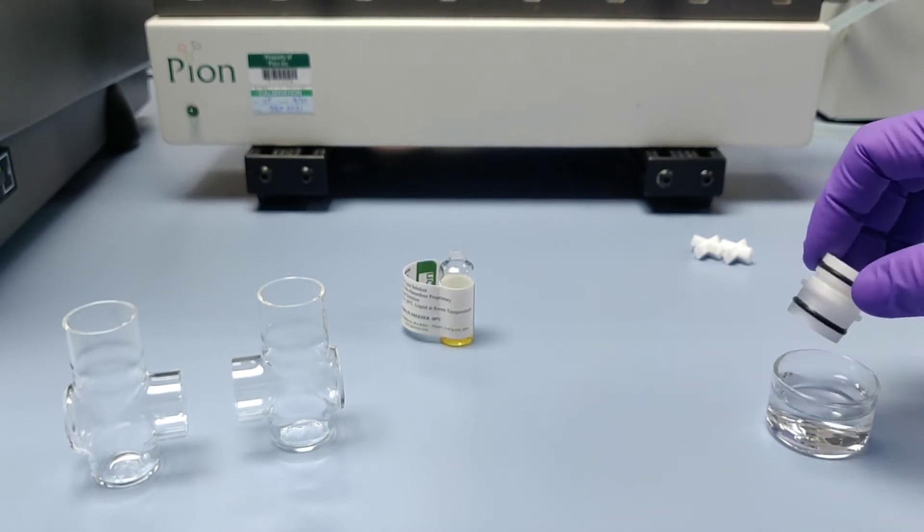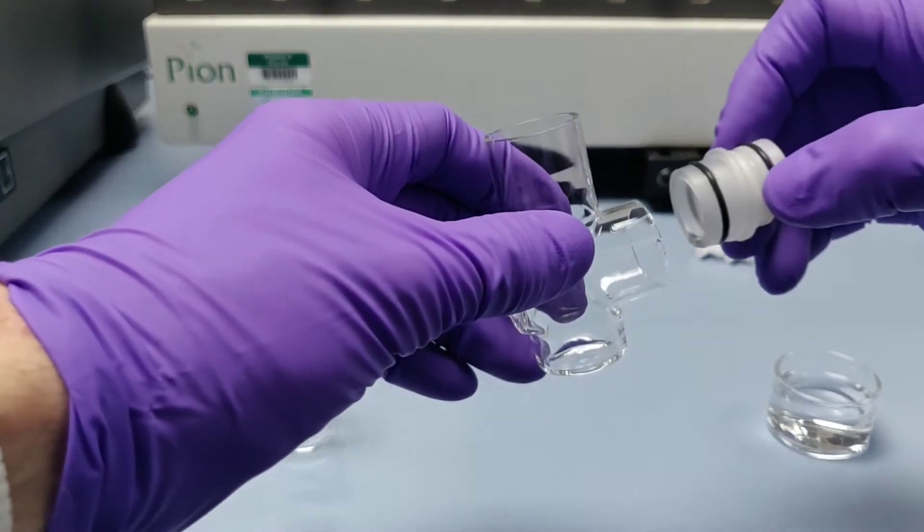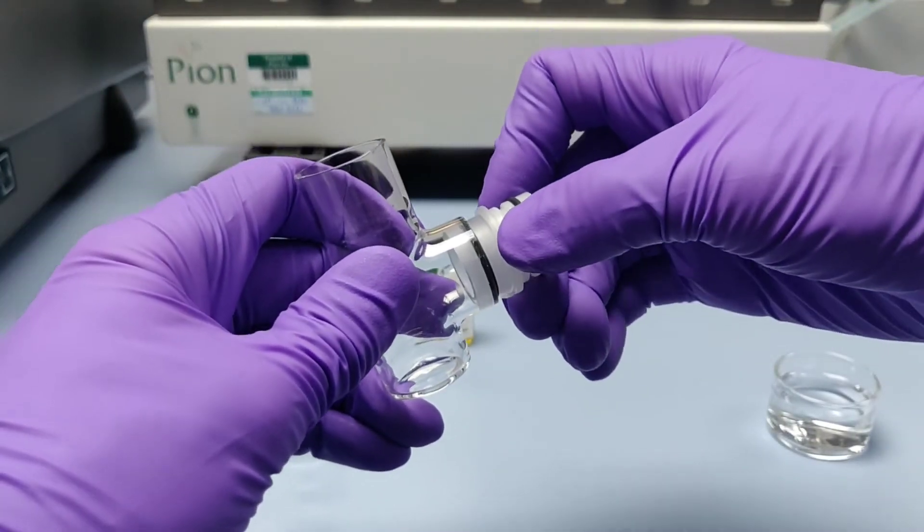To aid with assembly, the o-rings are wet with a small amount of deionized water and pressed into one half of the flux pair.